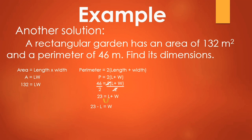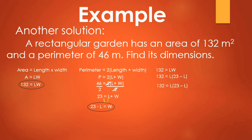That gives us w = 23 − l. So our two equations are: 132 = l × w, and w = 23 − l. Using the first equation, 132 = l × w, we substitute the second equation for w: 132 = l(23 − l). Simplifying: 132 = 23l − l².